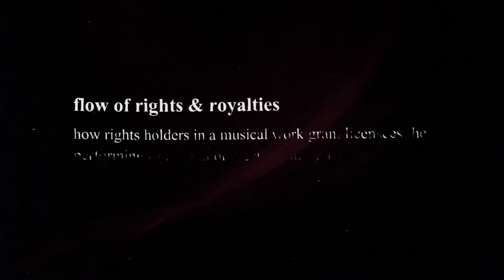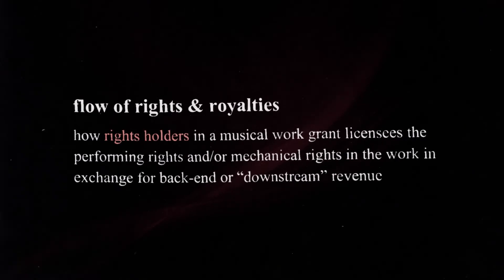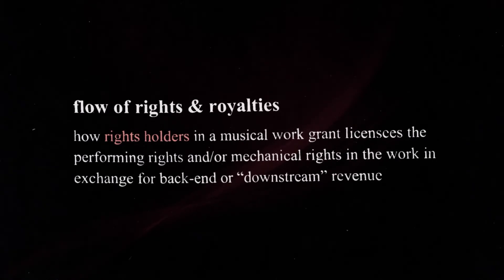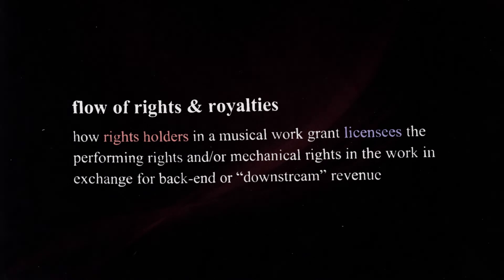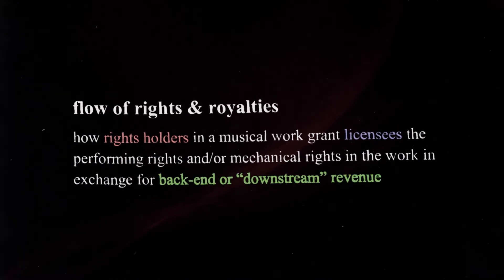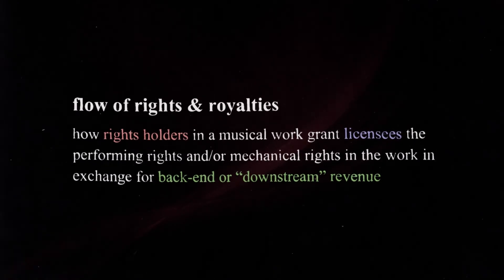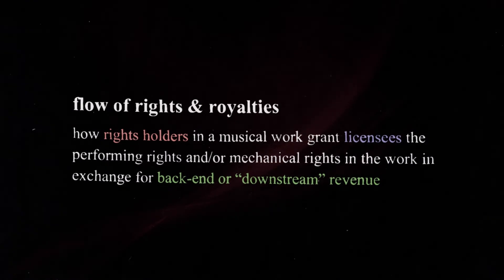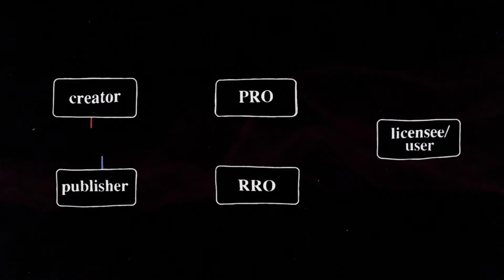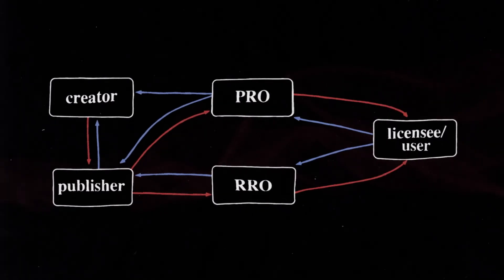What is often called the flow of rights and royalties for music creators refers to how rights holders in a musical work grant licensees the performing rights and/or mechanical rights in the work in exchange for back-end or downstream revenue in the form of performance royalties and/or mechanical royalties. For our purposes, the general flow may be depicted and described as follows.